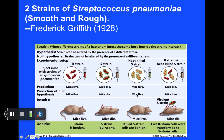Also notice, in the third panel here, that if you kill—if you boil, basically kill the smooth strain—the mice live. It doesn't kill them. What Griffith did was ask: what if we mix living rough cells, shown in red toward the far right, with heat-killed smooth cells? He predicted the mice would live, since after all the rough strain by itself and the heat-killed smooth strain by itself did not kill the mice.